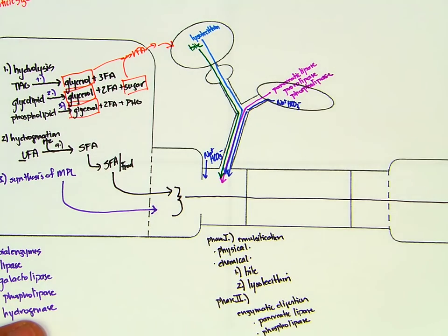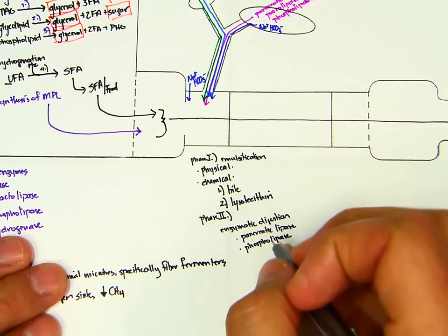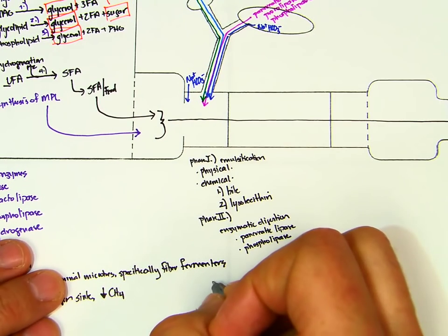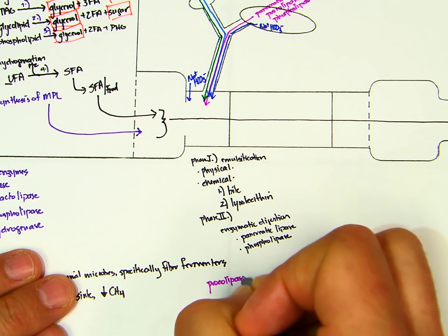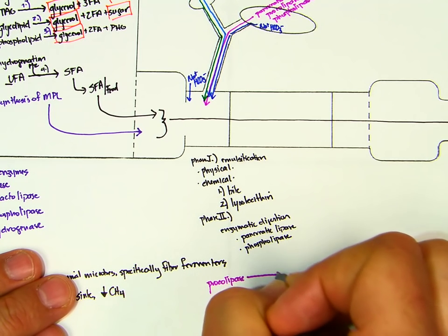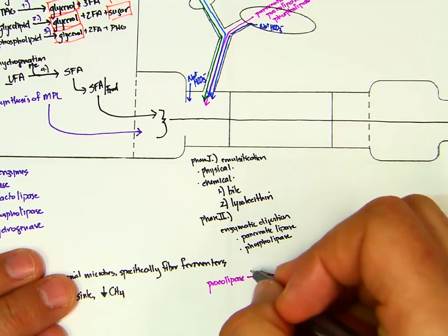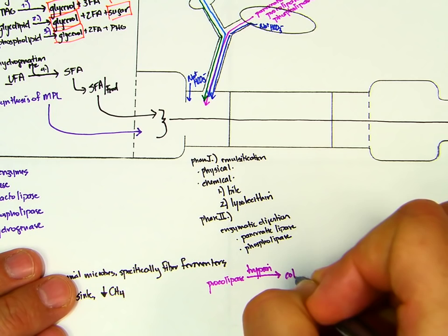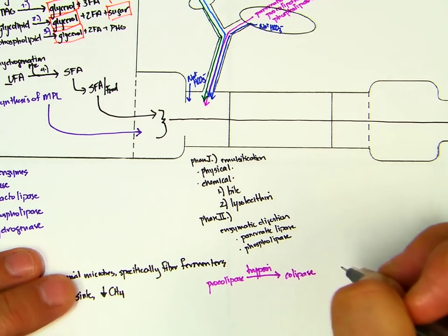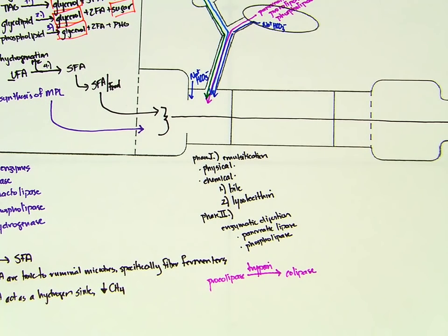For procolipase to be activated, we need trypsin, and that results in colipase. Colipase and pancreatic lipase are going to play a huge role because, even though we don't have a lot of TAG being presented to the small intestine, they're still present and we want to capture that.